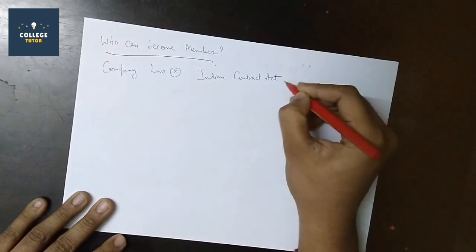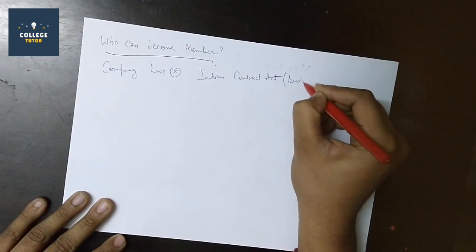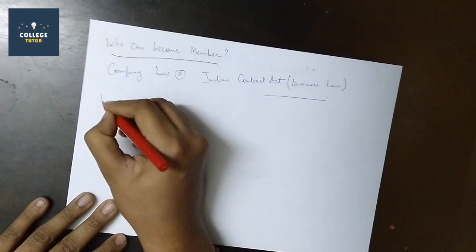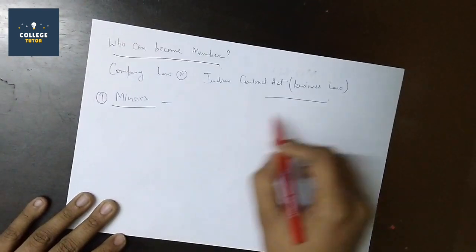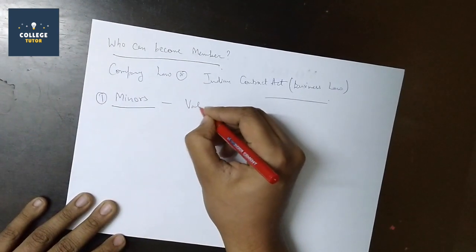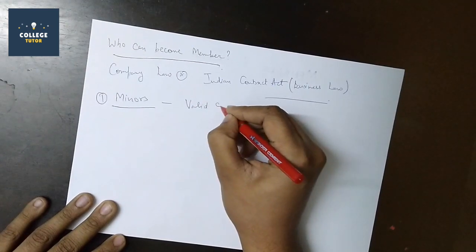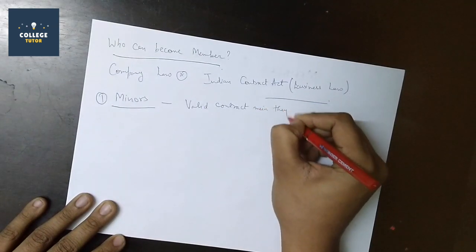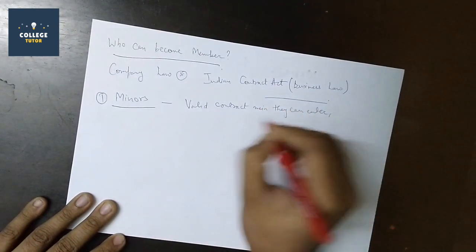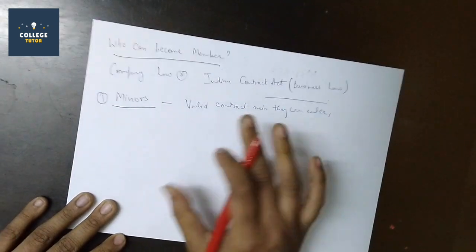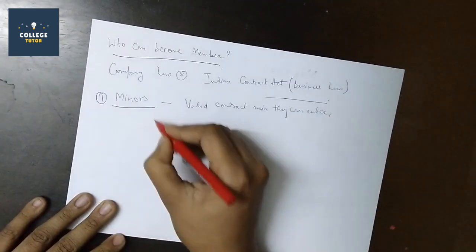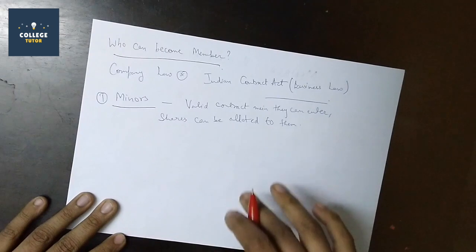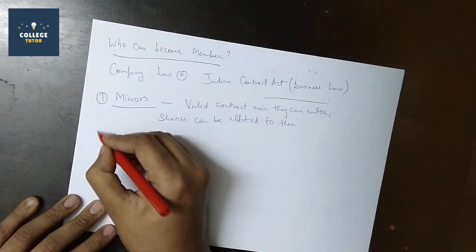Who can become a member? The answer is not in company law but in Indian Contract Act business law which we have already read. Let's discuss this - first, minors. Minors we have studied in business law. They can enter but they don't get membership. Shares can be held for them but cannot be allotted to them directly.